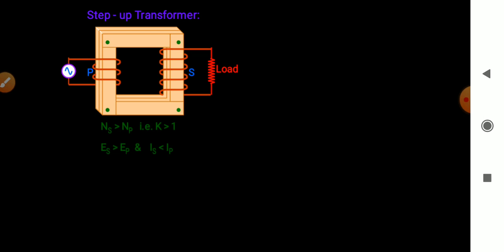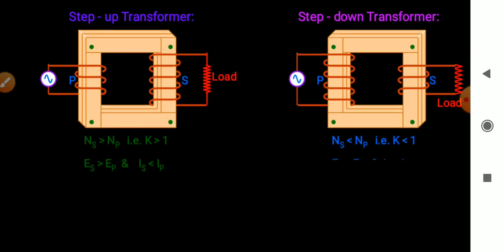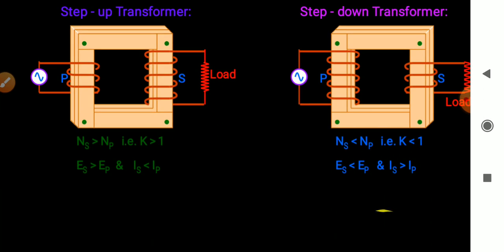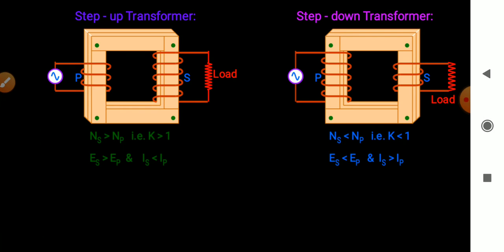In a step-up transformer, the number of turns in the secondary coil is greater than in the primary coil, so k is greater than 1. Therefore, Es is greater than Ep and Is is less than Ip. In a step-down transformer, the number of turns in the secondary coil is less than in the primary coil, so k is less than 1. Therefore, Es is less than Ep and Is is greater than Ip.